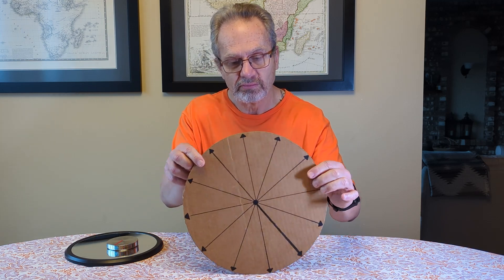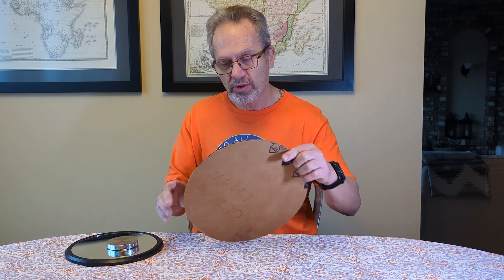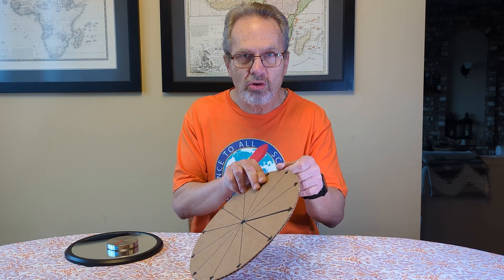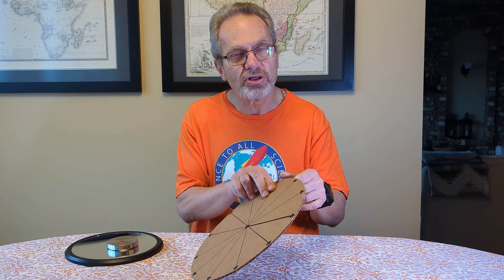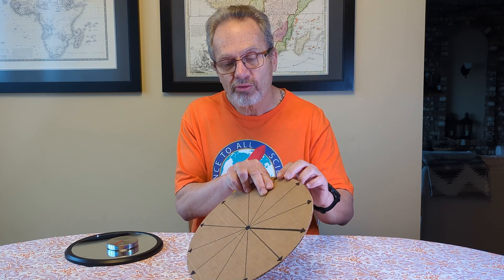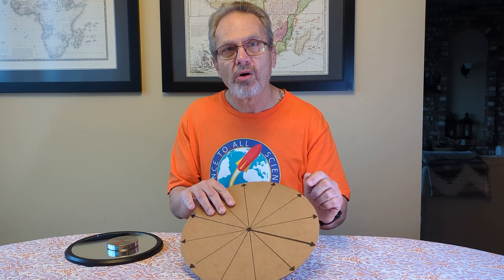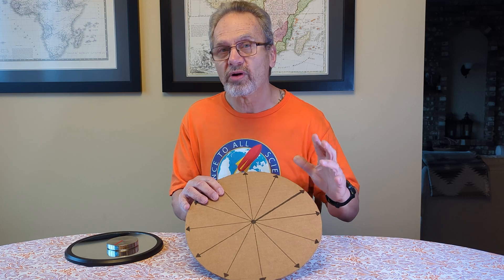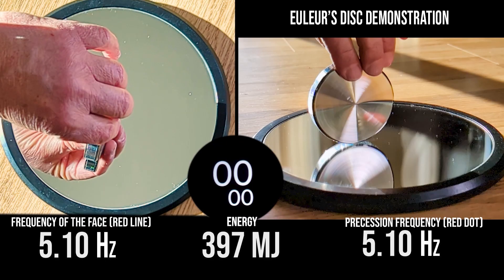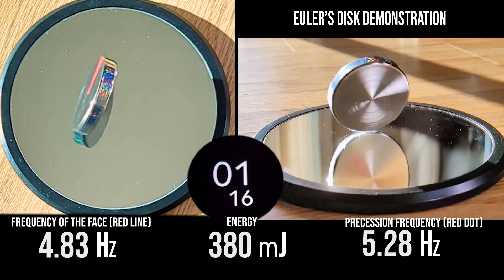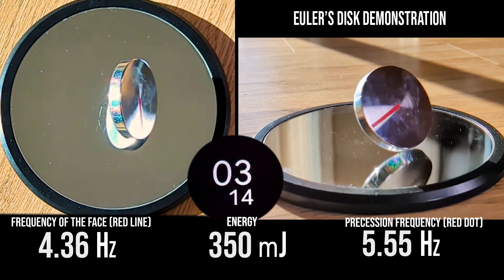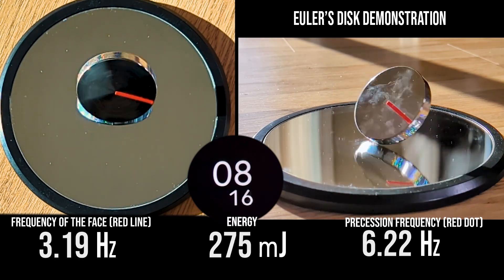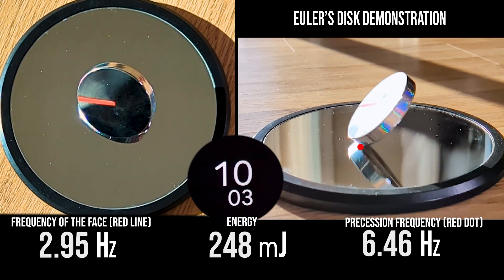When it starts off, it's rolling almost upright. Those two frequencies are the same, but as it slowly falls — because it loses energy — the precession frequency increases while the rotational frequency of the face decreases. So that's what we're going to first look at. As you can see, the precession frequency is increasing and the frequency of the face is decreasing quite dramatically.